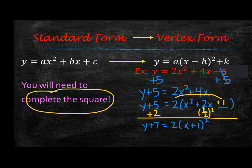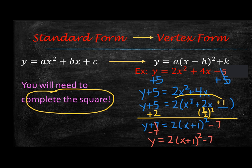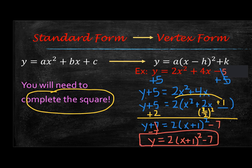And then last but not least, subtract the 7 over to the other side, and now we have our vertex form, y equals 2 times x plus 1 quantity squared minus 7. So this makes it real easy to figure out what our vertex is, whether it has been stretched or compressed in the transformations that are occurring.